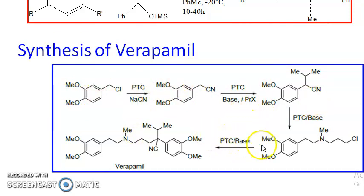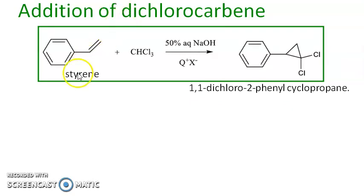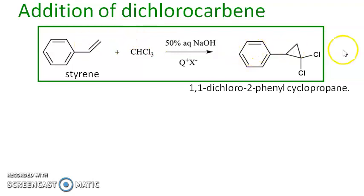Look at the beauty — you are not using any toxic solvents; easily you can carry out the reaction. Another example is the addition of dichlorocarbene, which is a very useful application of PTC. You have to use CHCl₃ as one of the reagents. Styrene is treated with chloroform, using only NaOH as a base and PTC. You can easily introduce a cyclopropane ring on the styrene and you get 1,1-dichloro-2,3-diphenylcyclopropane.